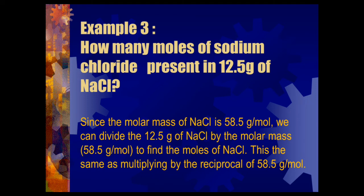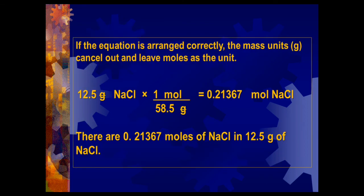Example 3: How many moles of sodium chloride are present in 12.5 grams of NaCl? Since the molar mass of sodium chloride is 58.5 g/mol, we divide 12.5 grams by 58.5 g/mol — the gram units cancel, leaving moles. 12.5 divided by 58.5 gives 0.21367 moles. Therefore, 0.21367 moles of sodium chloride is present in 12.5 grams of sodium chloride.